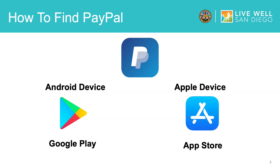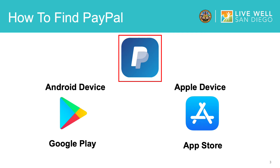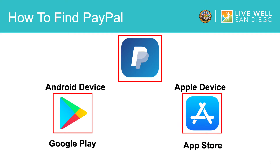You can find the PayPal app by searching on Google Play or the App Store. The app icon looks like this, so you know you have the right one. For Android devices, you can find it on Google Play, and for Apple devices, you can find it on the App Store. Once you have found the PayPal app with this icon, tap to install the app on your device.